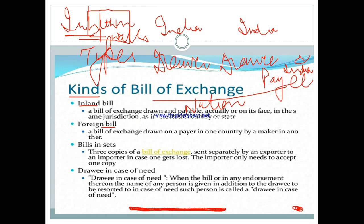Second is foreign bill — the reverse of inland bill. Drawer may be from India, drawee may be from Pakistan, payee may be from China — different countries, different jurisdictions, not belonging to the same wall. Foreign bill involves two or more countries. It is opposite to inland bill. Inland is within the same country and foreign bill is outside the country.